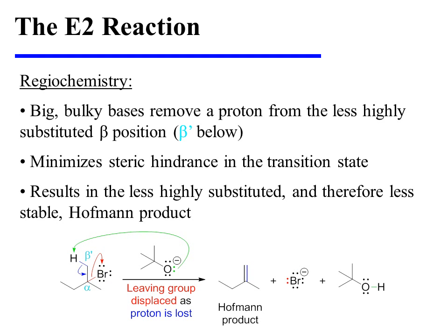On the other hand, big, bulky bases can reach only the most accessible beta protons, and those reside on the less highly substituted beta position. Removing protons from these locations minimizes steric hindrance in the transition state, but it results in the less highly substituted, and consequently less stable, product, which is known as the Hoffman product.